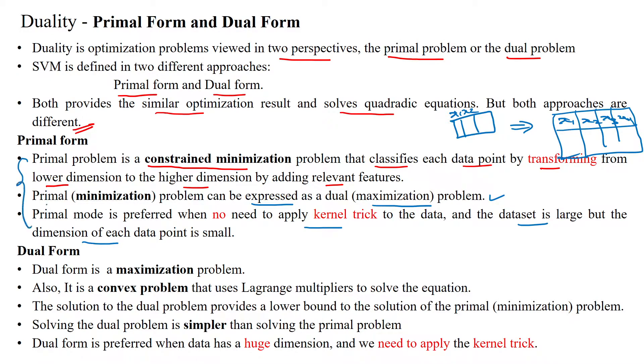These are features of primal form. Dual form is a maximization problem which is a convex problem, using Lagrangian multipliers to solve equations with equality or inequality constraints, using KKT theorem.